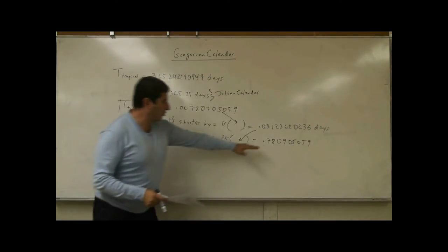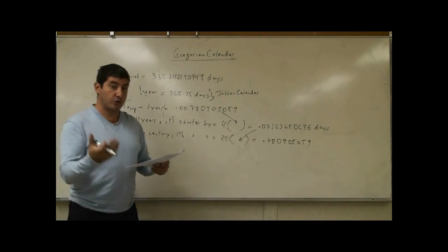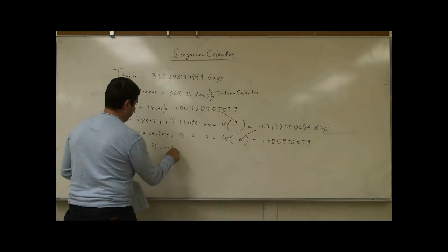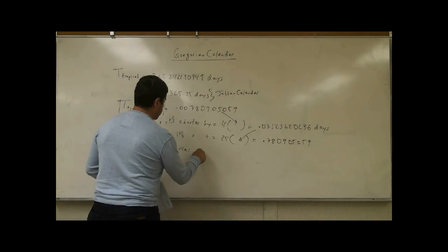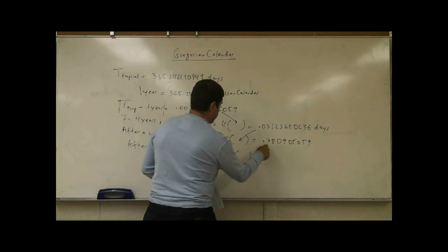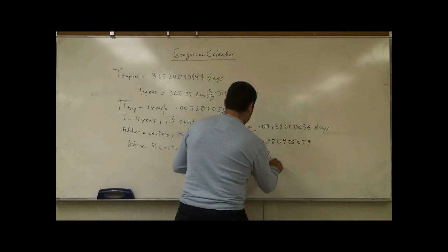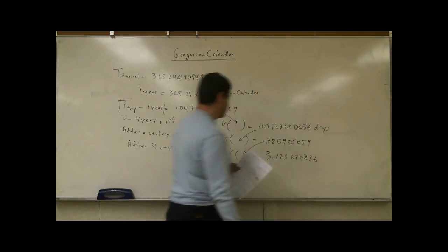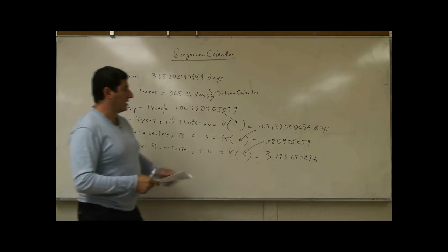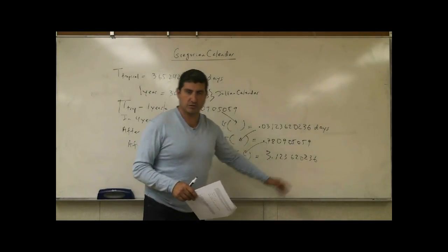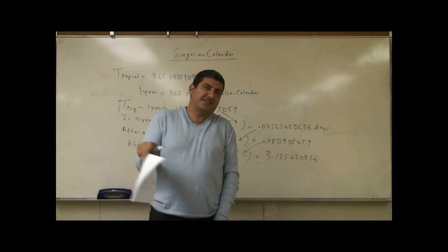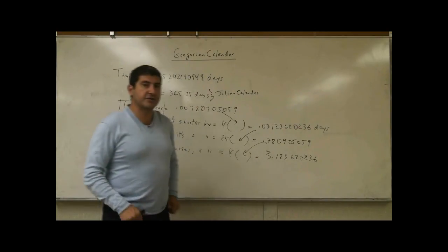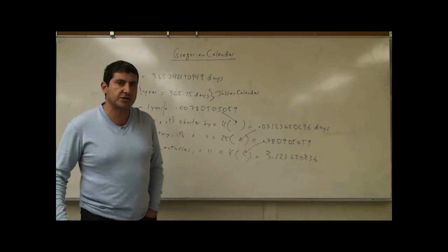Now what's going to happen? If you multiply this by another four, that means four centuries. After four centuries, the tropical year is shorter by what? Four times this number, and you get 3.123620236. So after four centuries, you have over-added three days and a little bit more. So here's what the Gregorian calendar concept comes from.